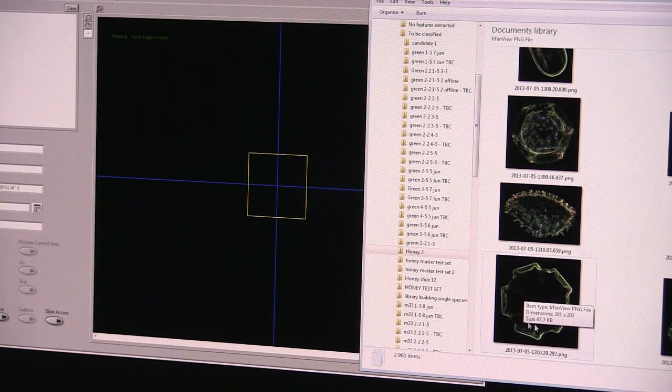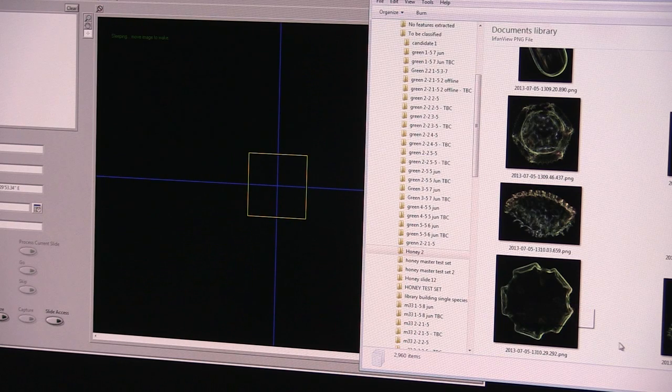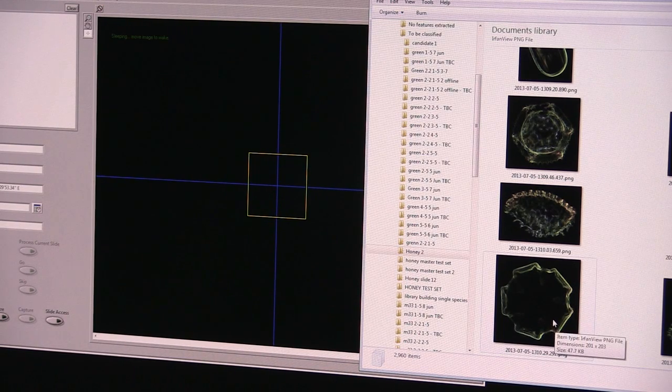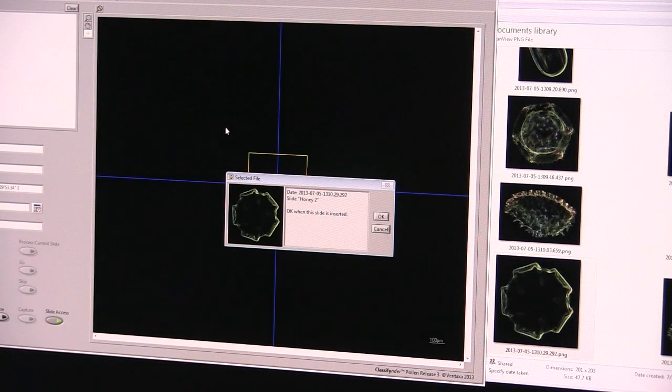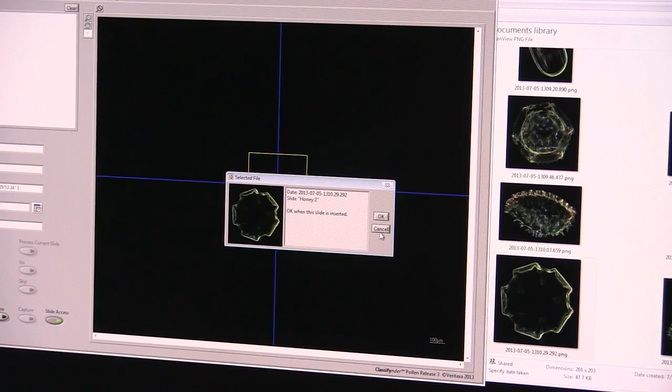Say for example we wish to revisit this particular pollen image here. So to do that we drag and drop it into the classifier finder and then it prompts us to ask for the slide.